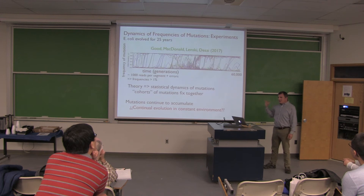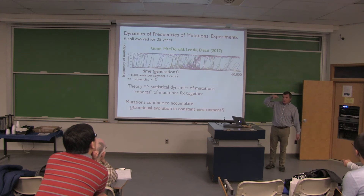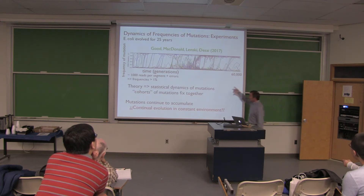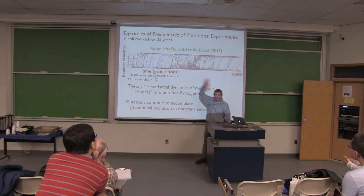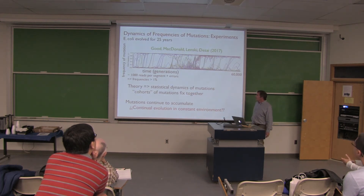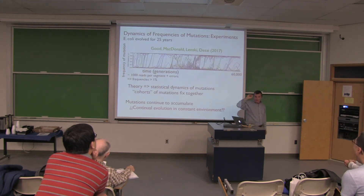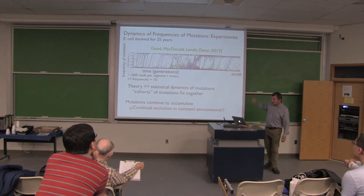This at least superficially suggests that in this supposedly constant environment — just reproducing from one day to the next — the bacteria are getting continual evolution, which goes completely contrary to intuition. One would say if you're in a constant environment, eventually there's the fittest — you'll get closer and closer and slow down. It's not clear yet whether this is just slowing down or other things. The theory is now good enough that interesting features show up as disagreements with theory, and that clustering behavior was one such unexpected prediction.